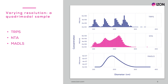This figure shows the concentration of particles plotted against particle diameter. TRPS data is shown at the top, with four clearly defined subpopulations. NTA data is in the middle, where only three subpopulations were detected with poor resolution. At the bottom, MADLS shows no evidence of the four subpopulations in the sample.